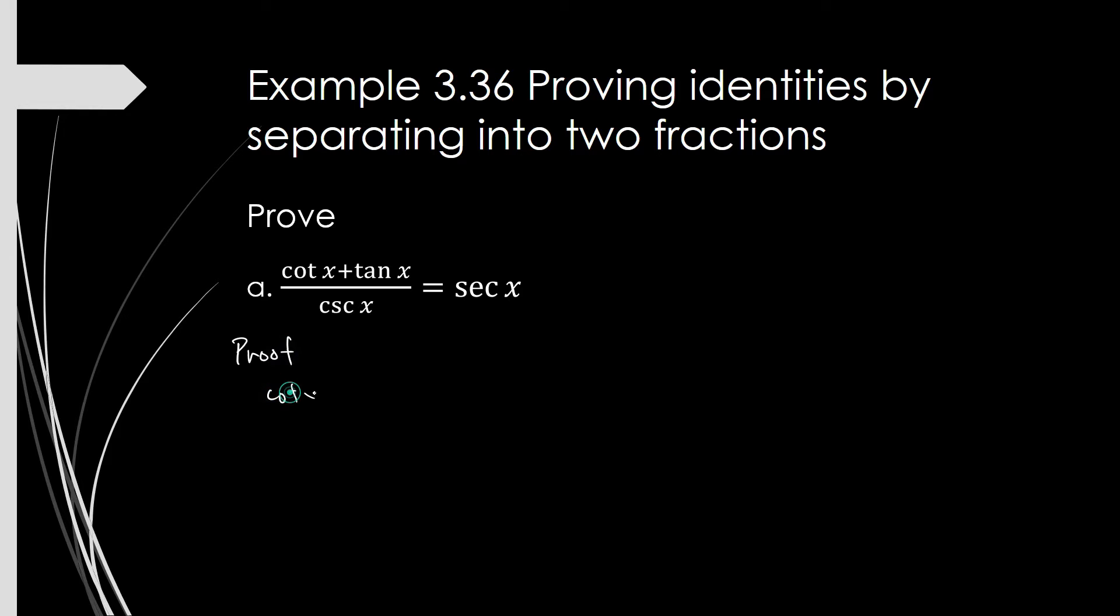Now, cotangent of x plus tangent of x divided by cosecant of x. This is where the part on separating into two fractions will come in. You can separate this into two fractions.